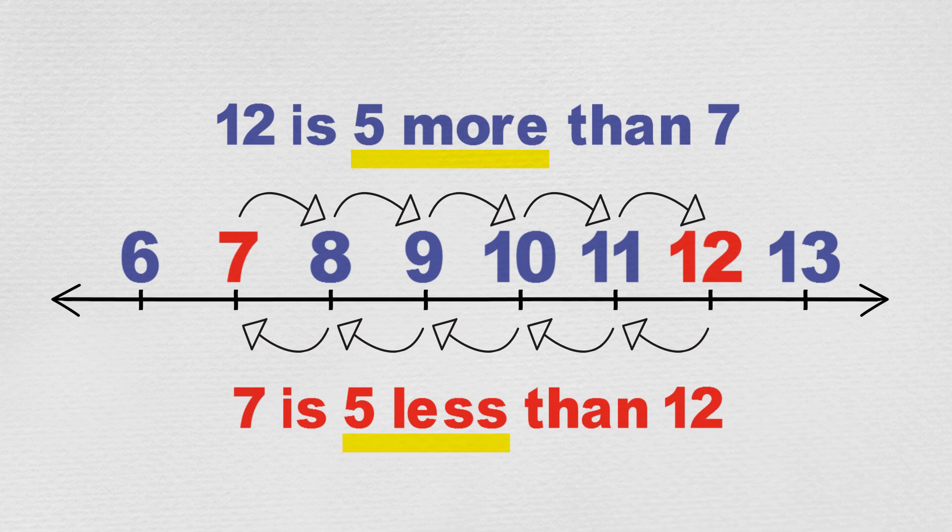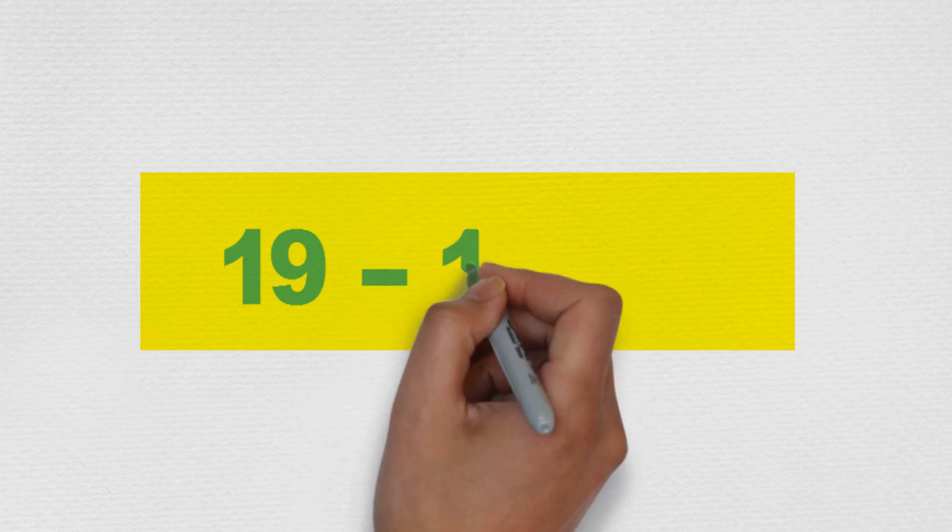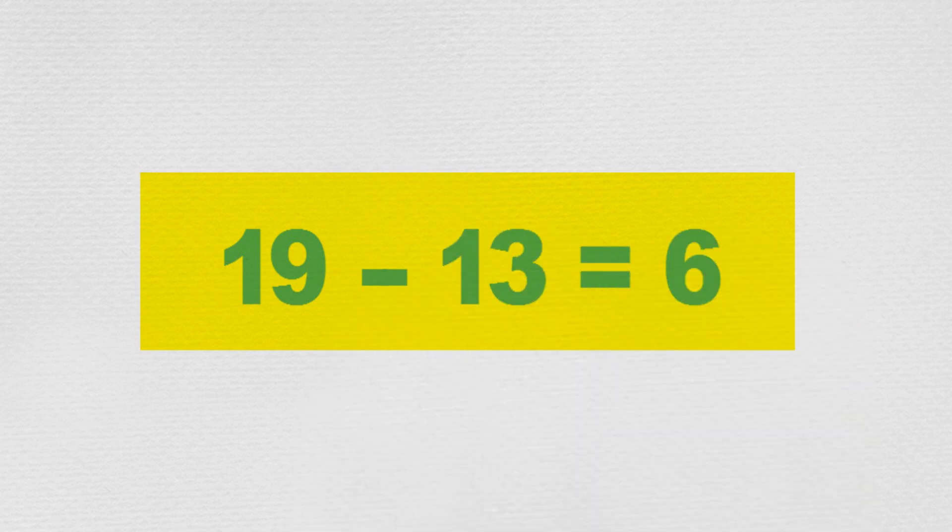Another way to work out the difference between two numbers is to just subtract the smaller number from the bigger one. Another example: the difference between 19 and 13 would be 19 minus 13, which equals 6, so the difference is 6.